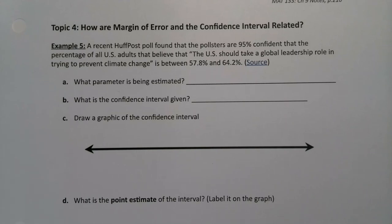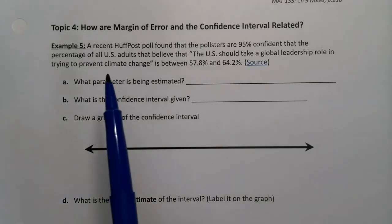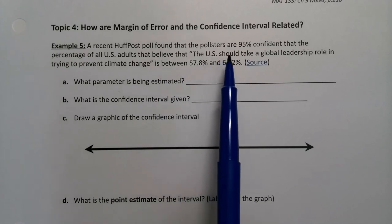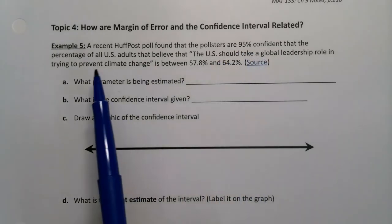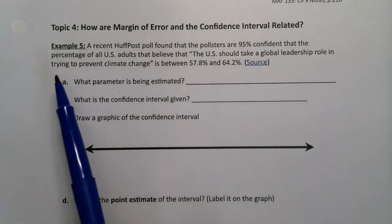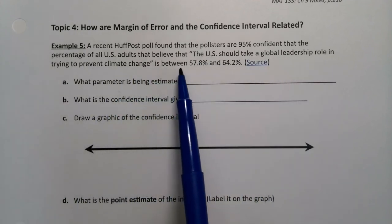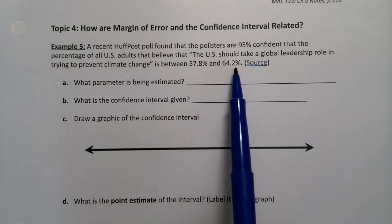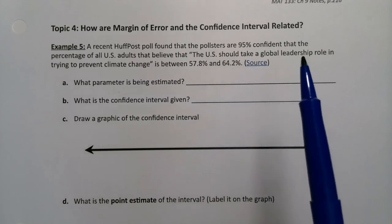For this next topic and example, we want to take a deeper look at the margin of error and understand its relationship to the confidence interval. A recent HuffPost article found that the pollsters are 95% confident the percentage of all U.S. adults that believe the U.S. should take a global leadership role in trying to prevent climate change is between 57.8 and 64.2%.